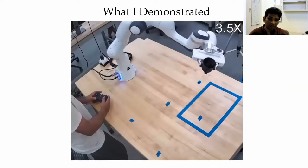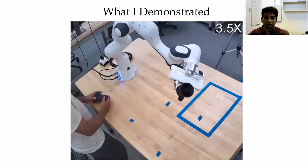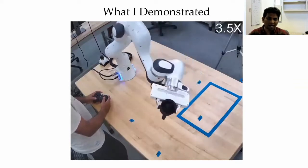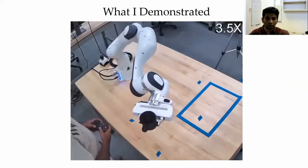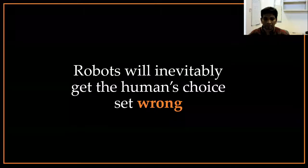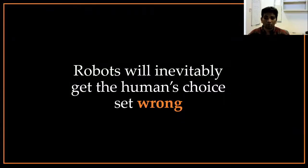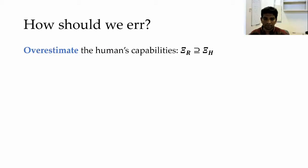However, returning to the demonstration I showed you earlier, here due to some constraints, the human is actually unable to show a good demonstration for what they want. This leads to a problem. The robot will inevitably get the human's choice set wrong. And remember that having a good estimate of the human's choice set is key to the learning scenario. Given this problem, how should the robots err?